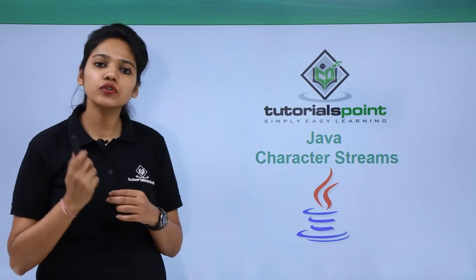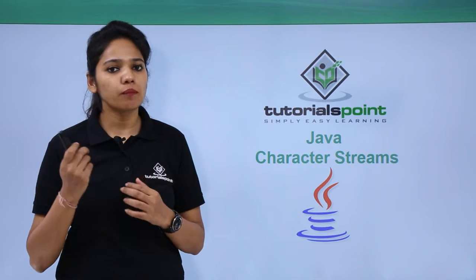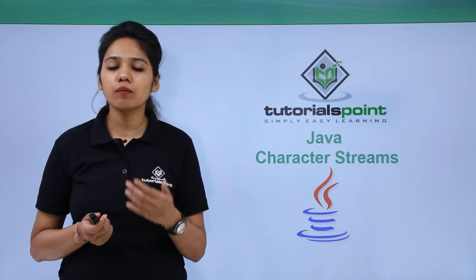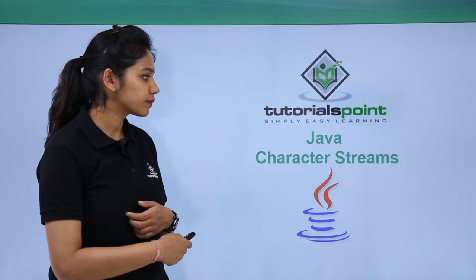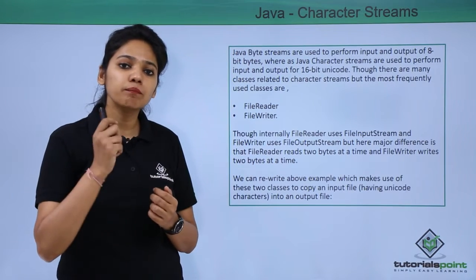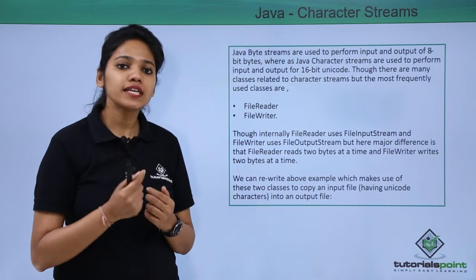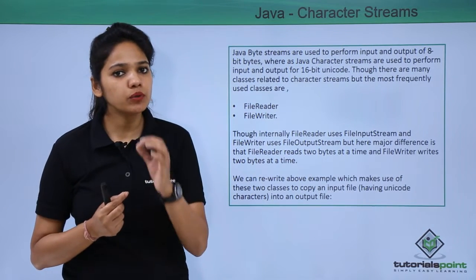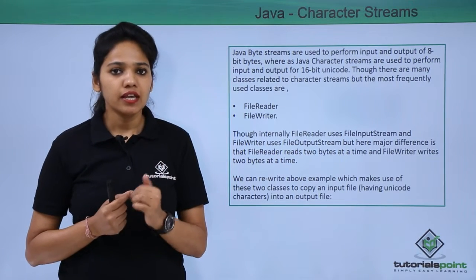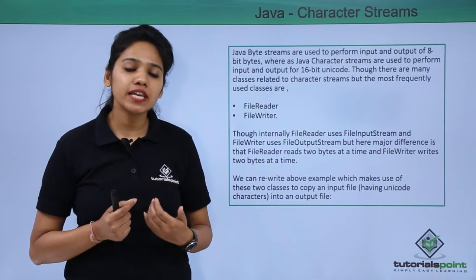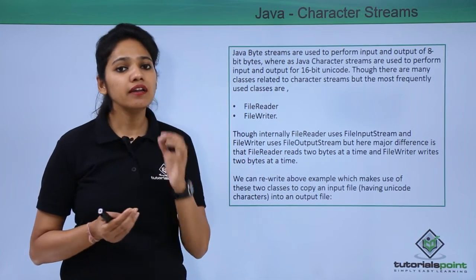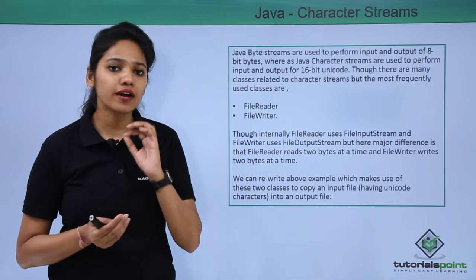We have already seen how you can perform input and output operations over byte data. Now let us see how to perform operations on character streams. A character stream supports 16-bit byte data, whereas the byte stream allows input and output operations over 8-bit byte information. The classes available to perform input and output operations on character streams are FileReader and FileWriter.